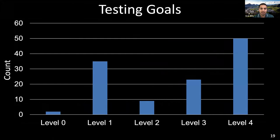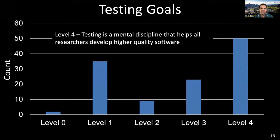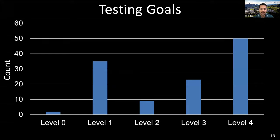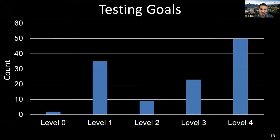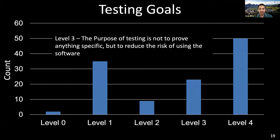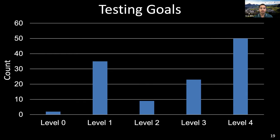We asked respondents about their testing goals, which are standard testing goals inherited from software testing literature. The maximum number of participants indicated level four — testing is a mental discipline that helps all researchers develop higher quality software. The second highest indicated level one — the purpose of testing is to show correctness. Level three was next — the purpose of testing is to reduce the risk of using the software. Level zero means there is no difference between testing and debugging, and level two means the purpose of testing is to show that the software does not work.